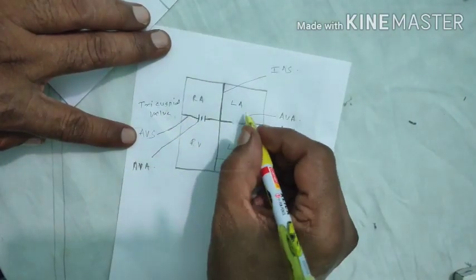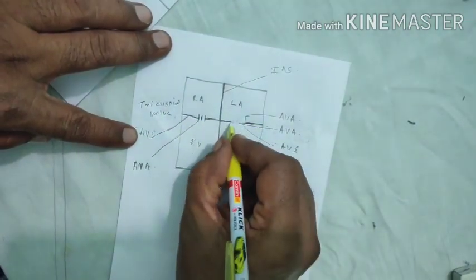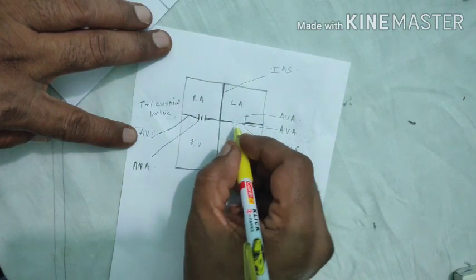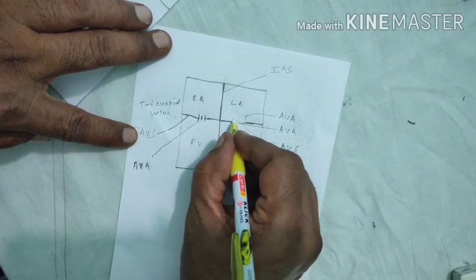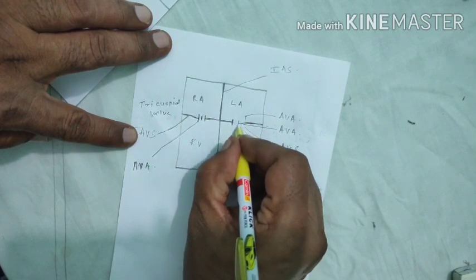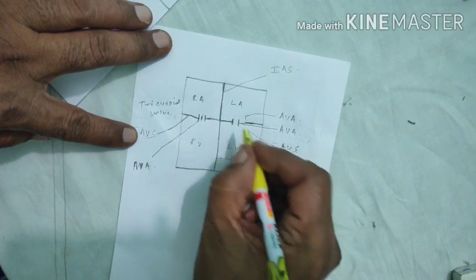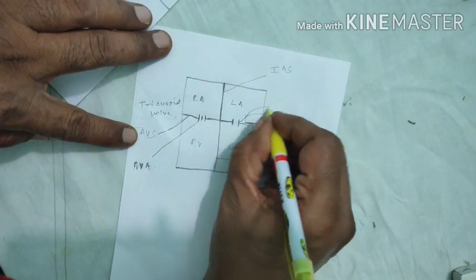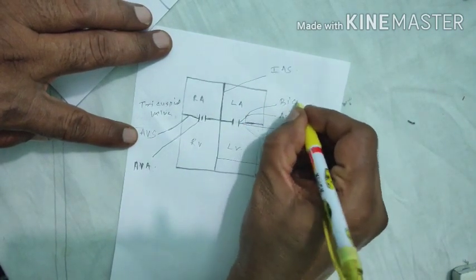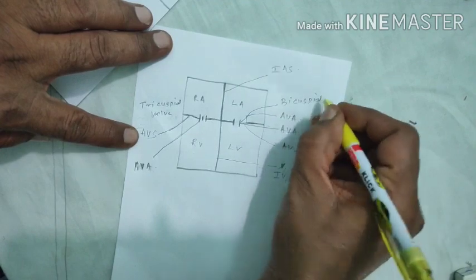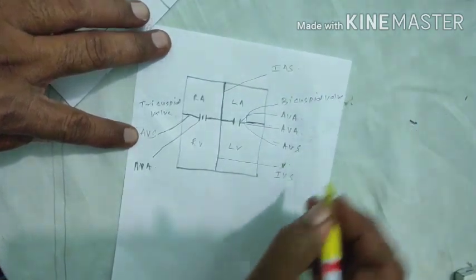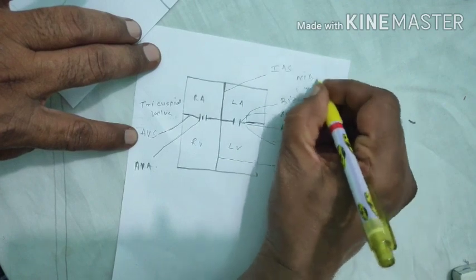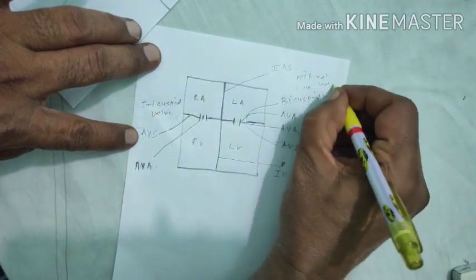Again, between the left auricle and left ventricle, this aperture is also guarded by a valve — but this valve is made up of only two flaps. So this valve is called the bicuspid valve, otherwise known as the mitral valve.